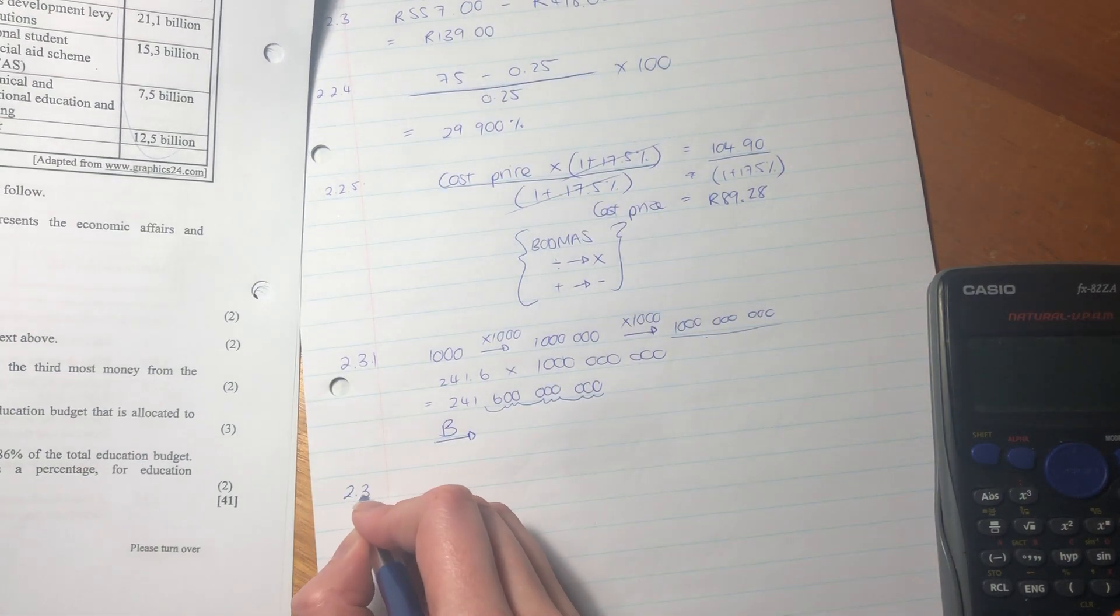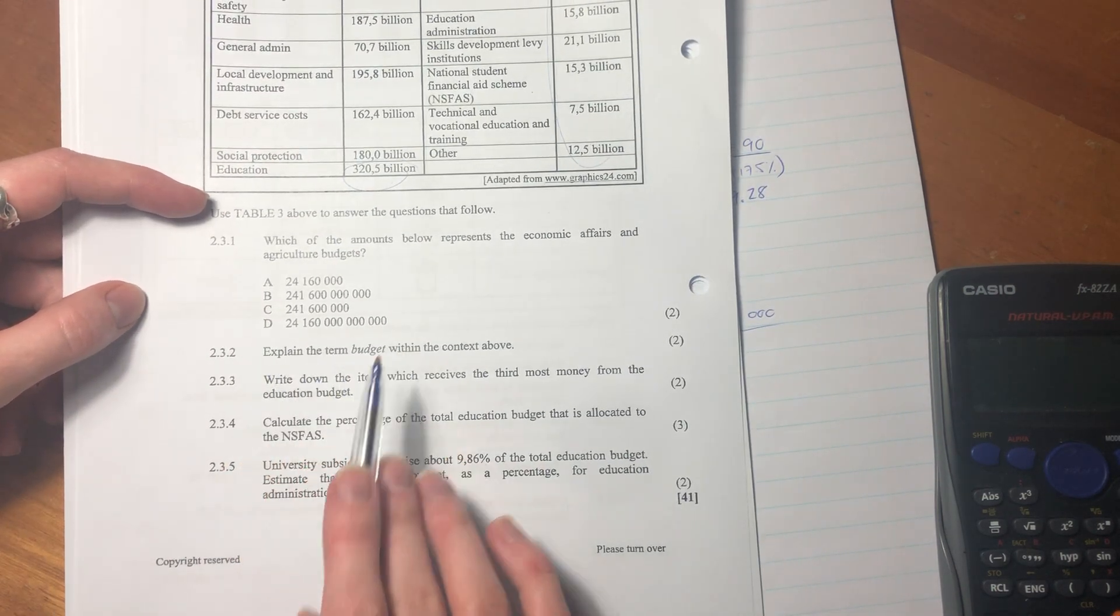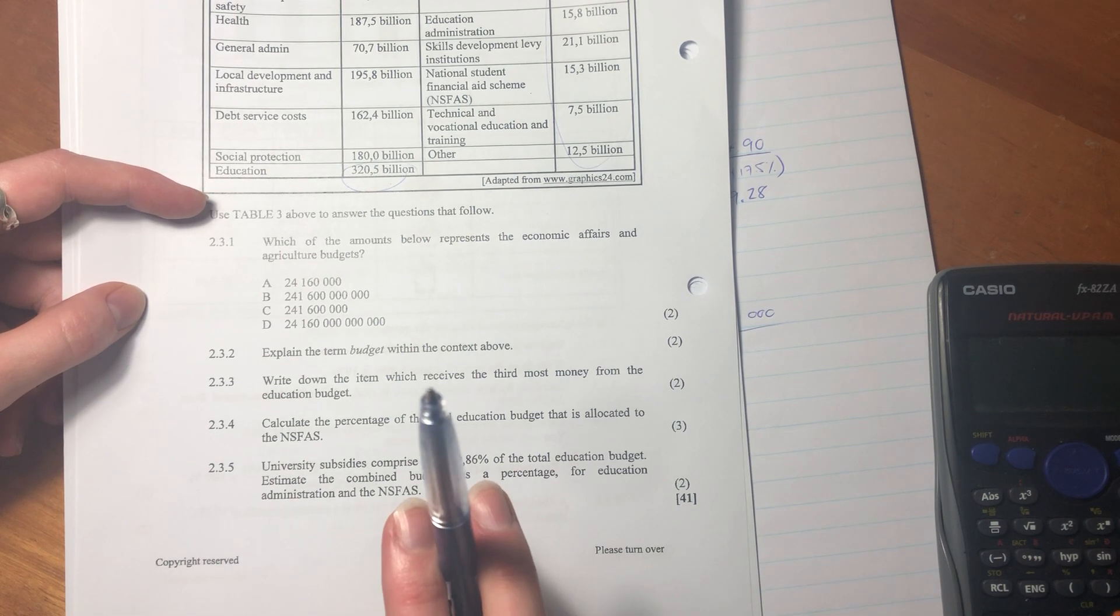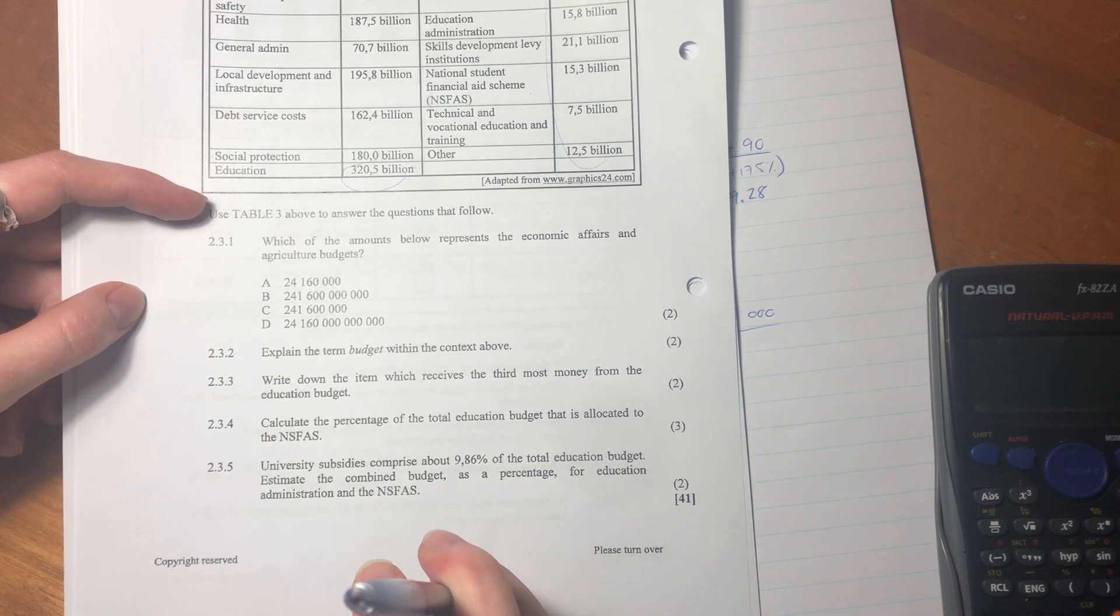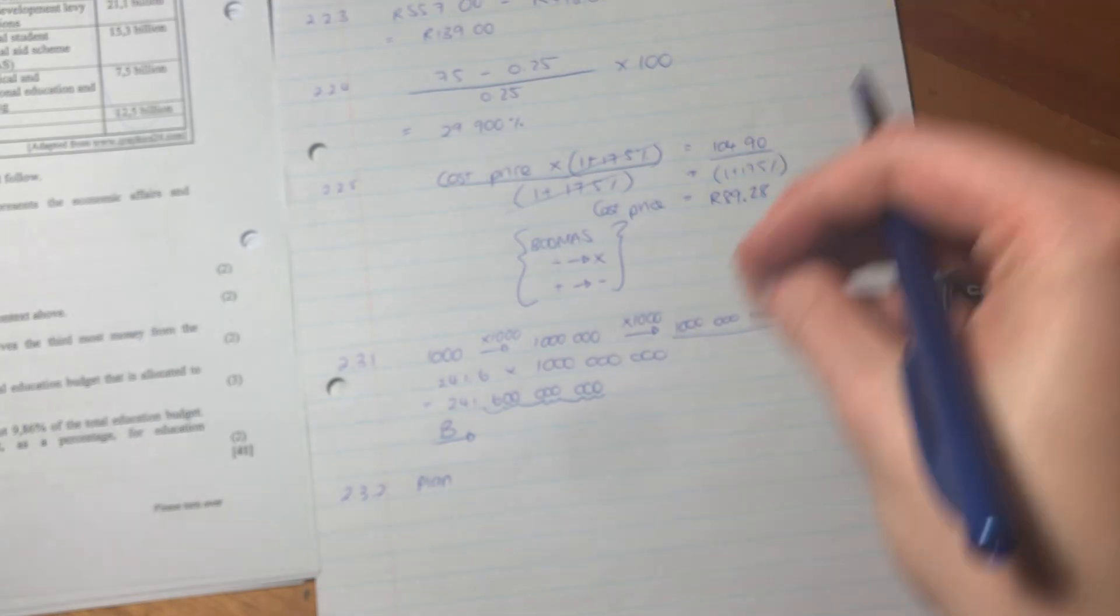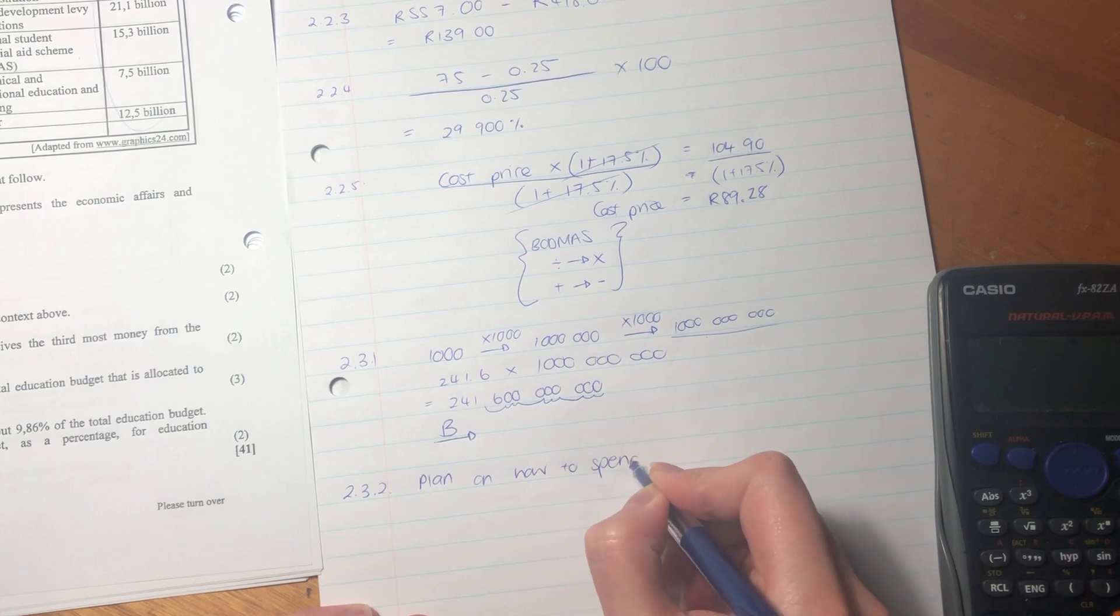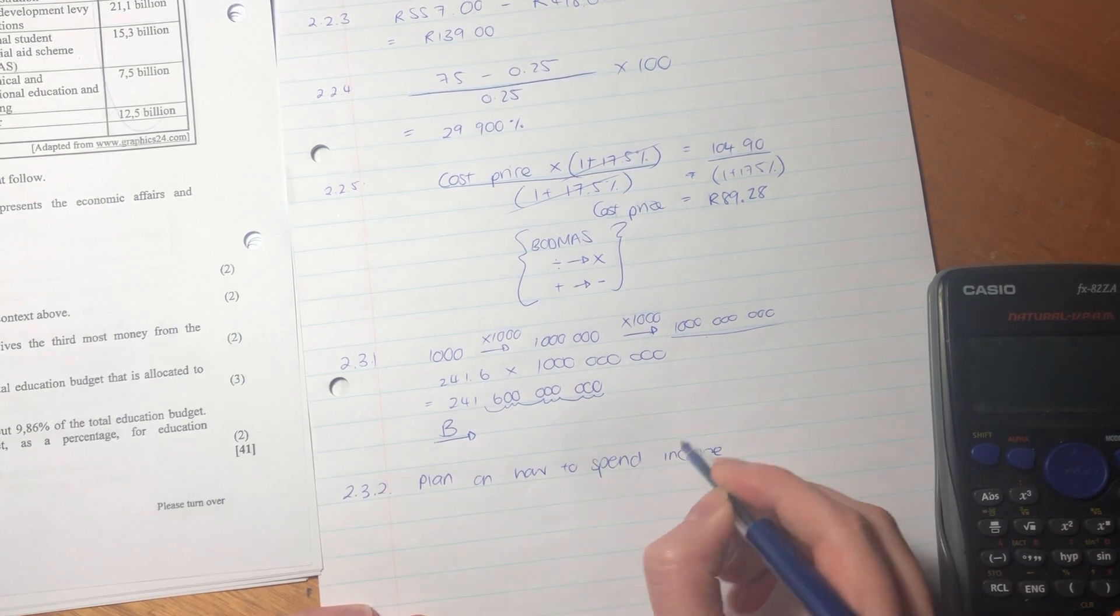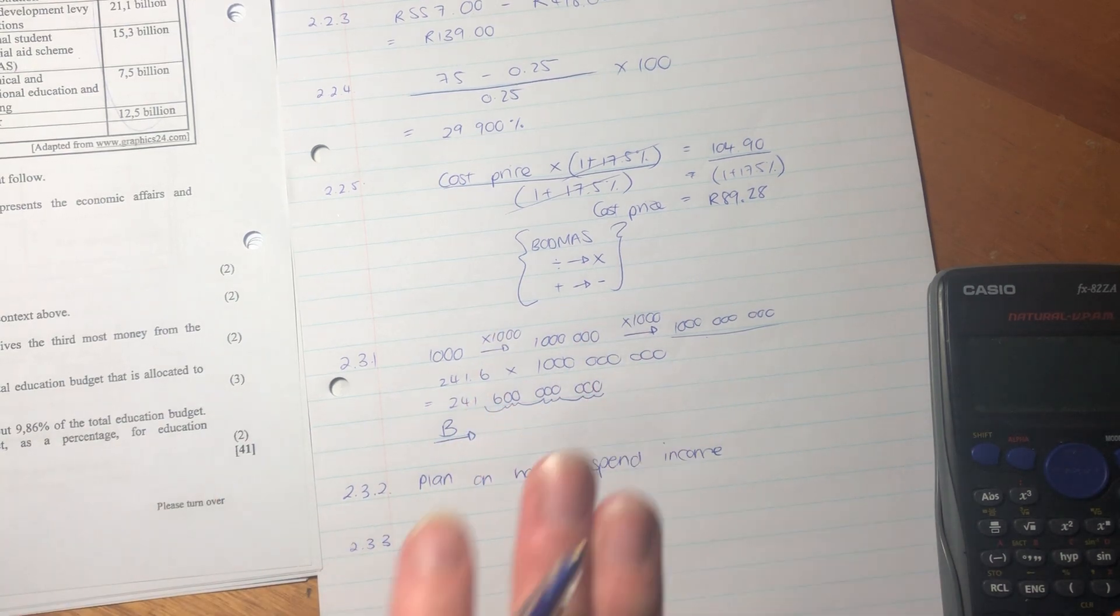Next question, explain the term budget within the context above. So budget is basically a plan of how we are going to spend money on different things. So it is a plan. It's important to say it's a plan, because a budget is an actual spending - it's money that we have that we're planning on spending in different places. So it's a plan on how to spend income. In this case, it would be income on different sectors, but for a personal budget it could be on own personal expenditure, like rent or food or petrol.